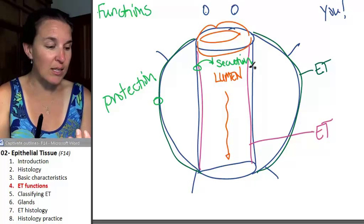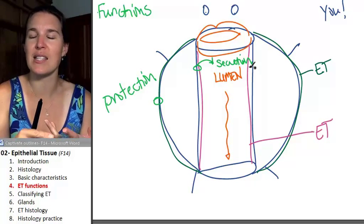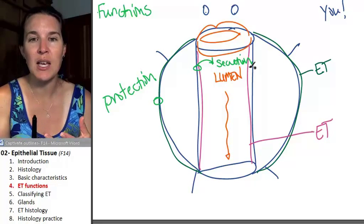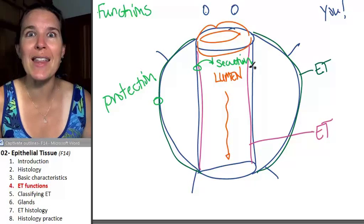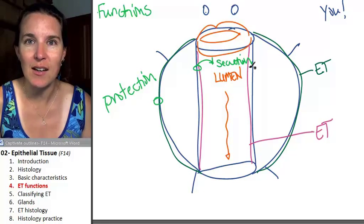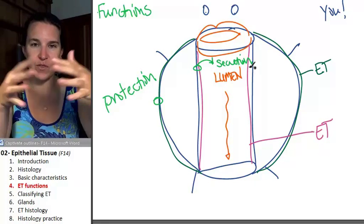So they can secrete mucus, they can secrete hormones, they can secrete digestive enzymes. Sometimes they are going to make sweat. They can secrete sweat and just squirt it out.